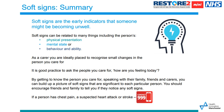In summary, soft signs are the early indicators that someone might be becoming unwell. They can be related to the person's physical presentation, mental state, behaviour, and ability. As a carer, you are ideally placed to recognise small changes. It's good practice to ask, 'How are you feeling today?' and to encourage friends and family to tell you if they notice any soft signs. If a person has chest pain, a suspected heart attack or stroke, call 999.